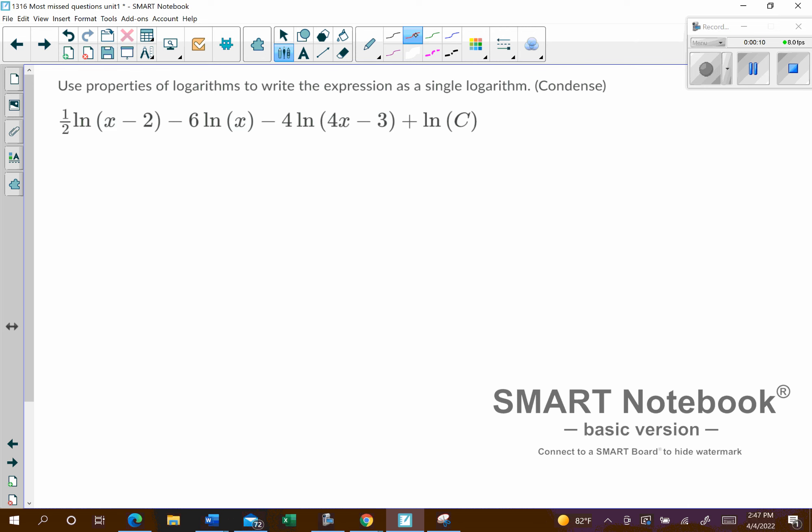So the first thing we want to do is take all these coefficients out in front and put them back as exponents for what the natural log is evaluating. So this will become natural log of x minus 2 raised to a one-half minus the natural log of x to a power of 6. You leave the sign there, you're just taking the number.